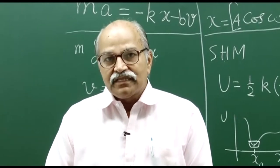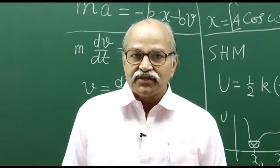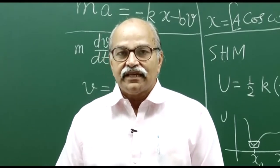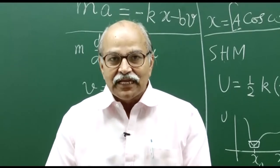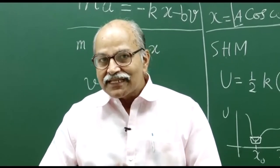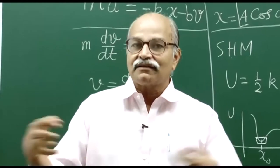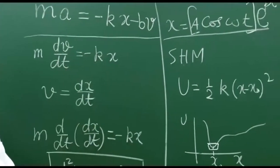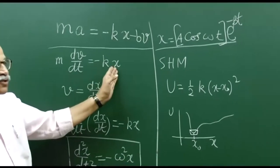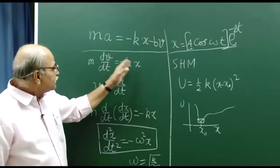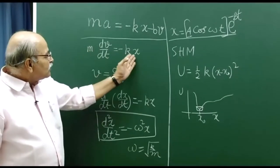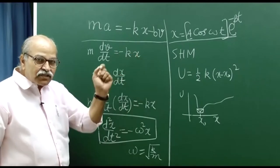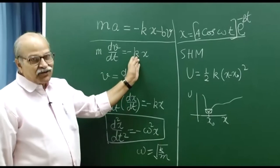We talked about oscillations of several kinds of systems and showed some experiments. Now, if a material object oscillates, the condition is that you must have some kind of a restoring force and a stable equilibrium, so that when it is displaced, the force brings it back and you can have oscillations. This is a special case called SHM, simple harmonic motion, in which the restoring force is proportional to X, and for small oscillations around the stable equilibrium, this will always be the case.